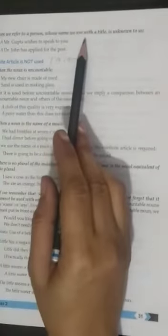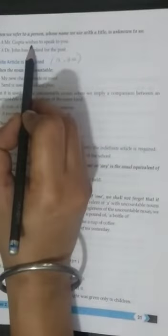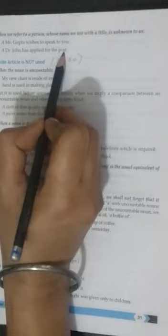When we refer to a person whose name we use with the title is unknown to us. We don't know about that. A Mr. Gupta wishes to speak to you, or a Dr. John has applied for the post.